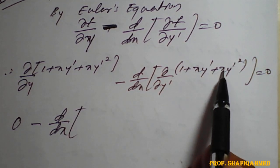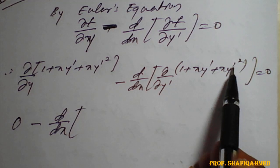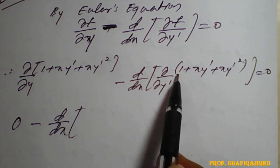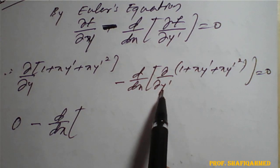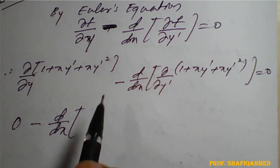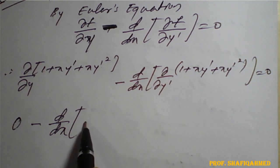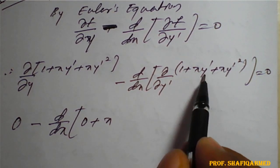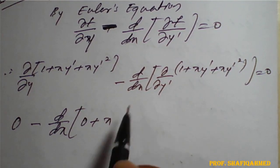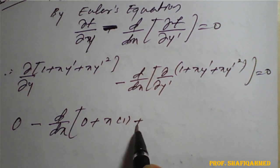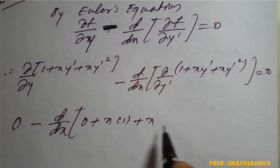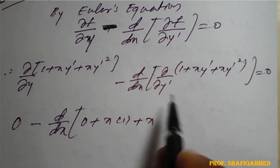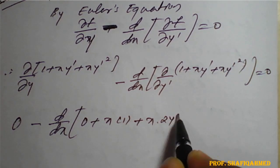So (1 plus x y dash plus x y dash square) with respect to y dash partially: partial derivative of 1 with respect to y dash is 0, plus x is a constant, partial derivative of y dash with respect to y dash is 1, plus x is a constant, partial derivative of y dash square with respect to y dash is 2 y dash.